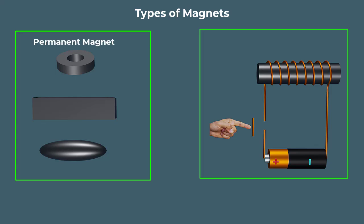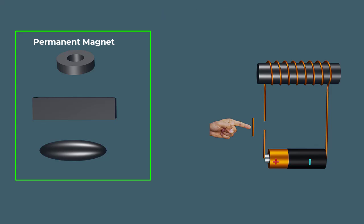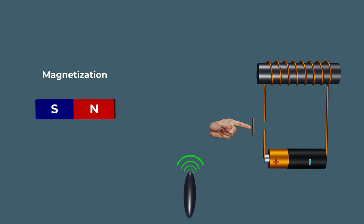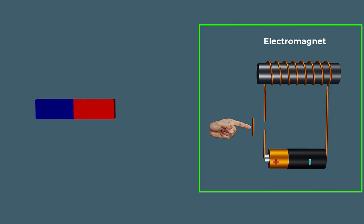Permanent magnets and electromagnets. Permanent magnets are objects made from materials that are naturally magnetized or have been magnetized and retain their magnetic field even without an external field. On the other hand, electromagnets are created by wrapping a coil of wire around a ferromagnetic core and passing an electric current through the wire.